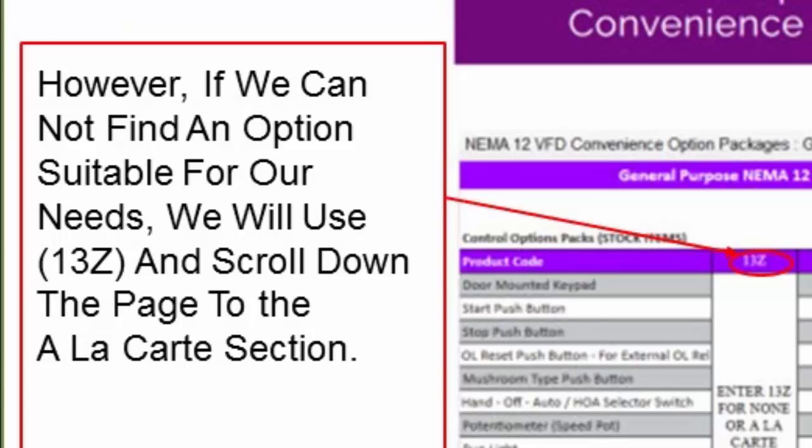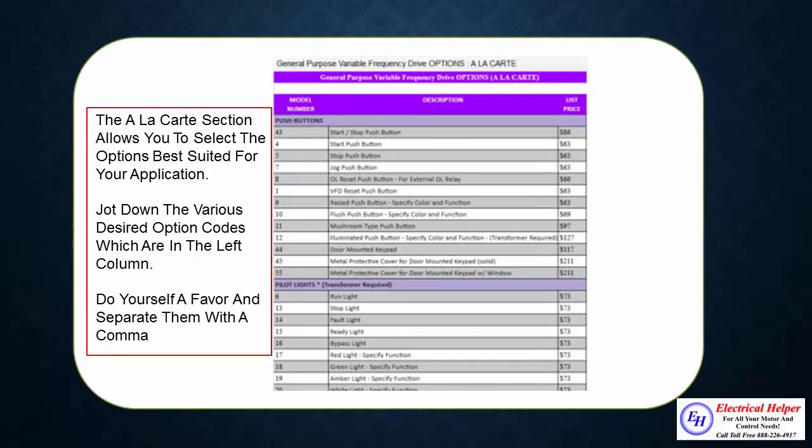To do this just scroll down the page and you'll see the a la carte section which allows you to enter your desired options which are located in the left column. Simply list the items needed by listing those option codes.